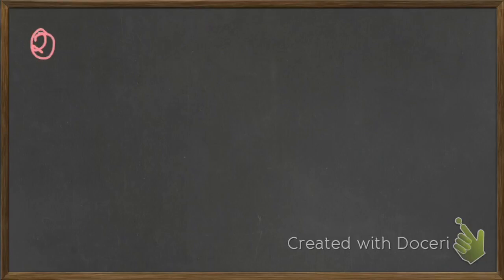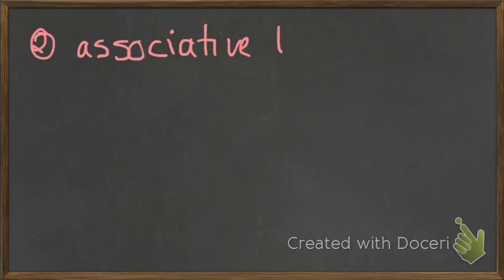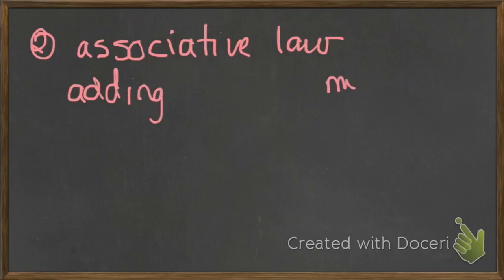The second property that we are going to look at is called the associative property, or the associative law. We're going to do both adding and multiplying. What this means is no matter where we put brackets, and no matter what we do first or second, we are always going to get the same answer.